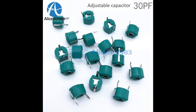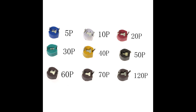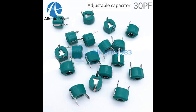In devices like frequency counters, signal generators, and spectrum analyzers, trimmer capacitors are used to calibrate the equipment to maintain accurate measurements, allowing precise adjustments to ensure the equipment operates at the desired frequencies or signal levels. In older analog TV receivers, trimmer capacitors were used in the tuner section to select the correct frequency band for receiving different channels, helping the circuit select the desired TV signal while rejecting unwanted ones.